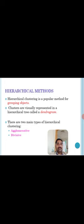Coming to hierarchical methods, it is an important and popular method in grouping the objects where these clusters are represented in a hierarchical tree. This process is termed as dendrogram. Two main types of hierarchical clusters are agglomerative and divisive.